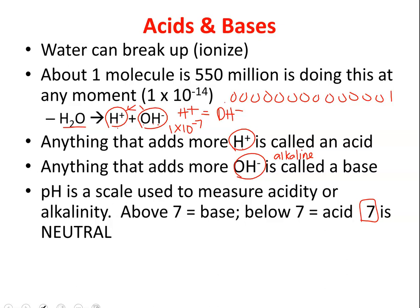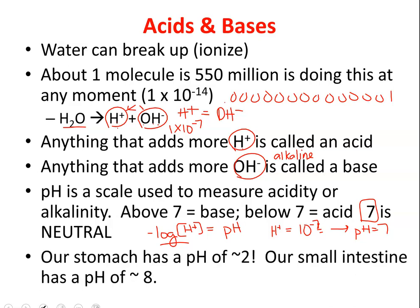The pH is actually calculated with a formula — the negative log of the hydrogen concentration gives us the pH. Most of you haven't done logs yet in math, but here's a shortcut: if the hydrogen concentration is 10 to the negative 7th, the pH is 7. That exponent becomes the pH, so you can easily convert from hydrogen ion concentration to pH. Above 7 is a base, below 7 is an acid, and 7 is neutral.